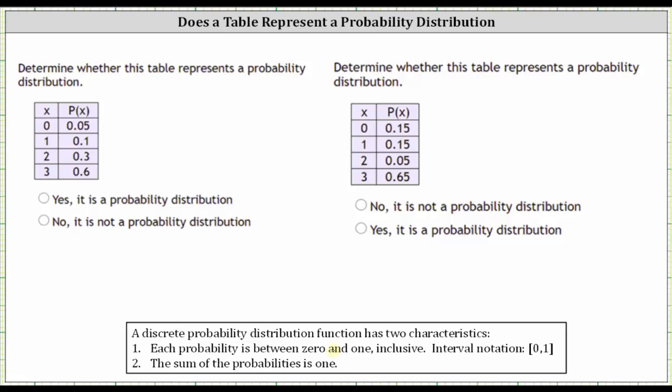So looking at the first table, the probabilities are under the column P of X or the probability of X. Notice how each of the probabilities are in the closed interval from zero to one, and now check to see if the sum is one or not.